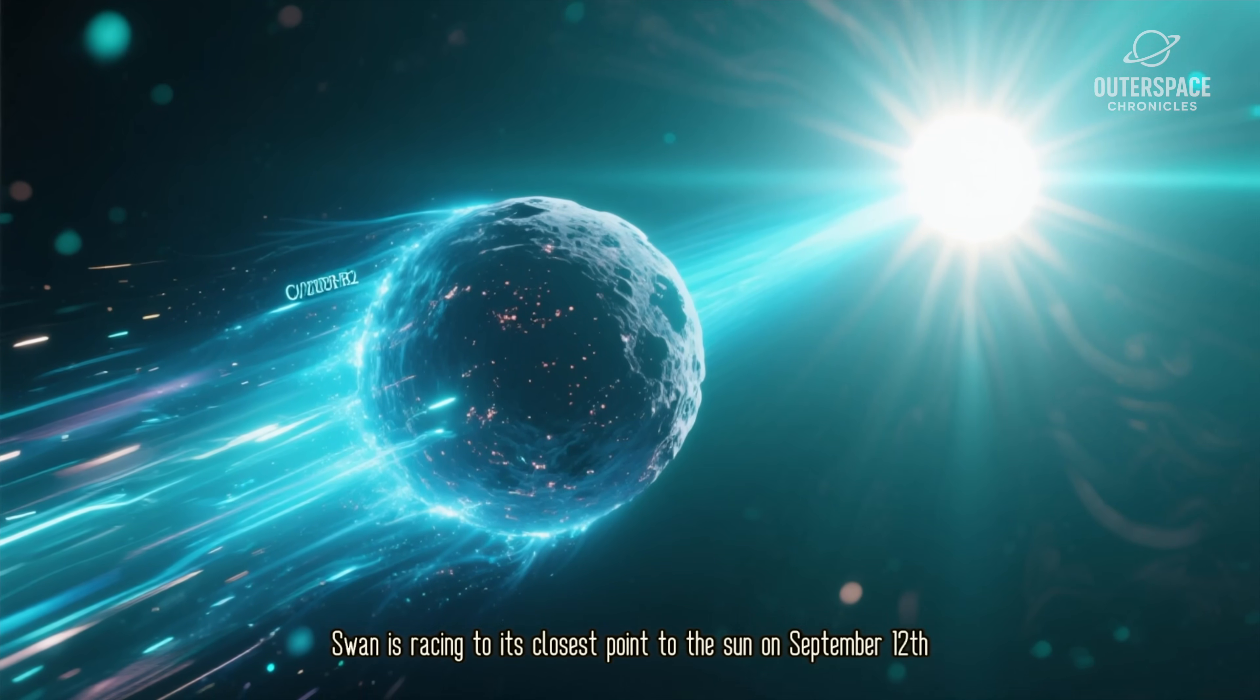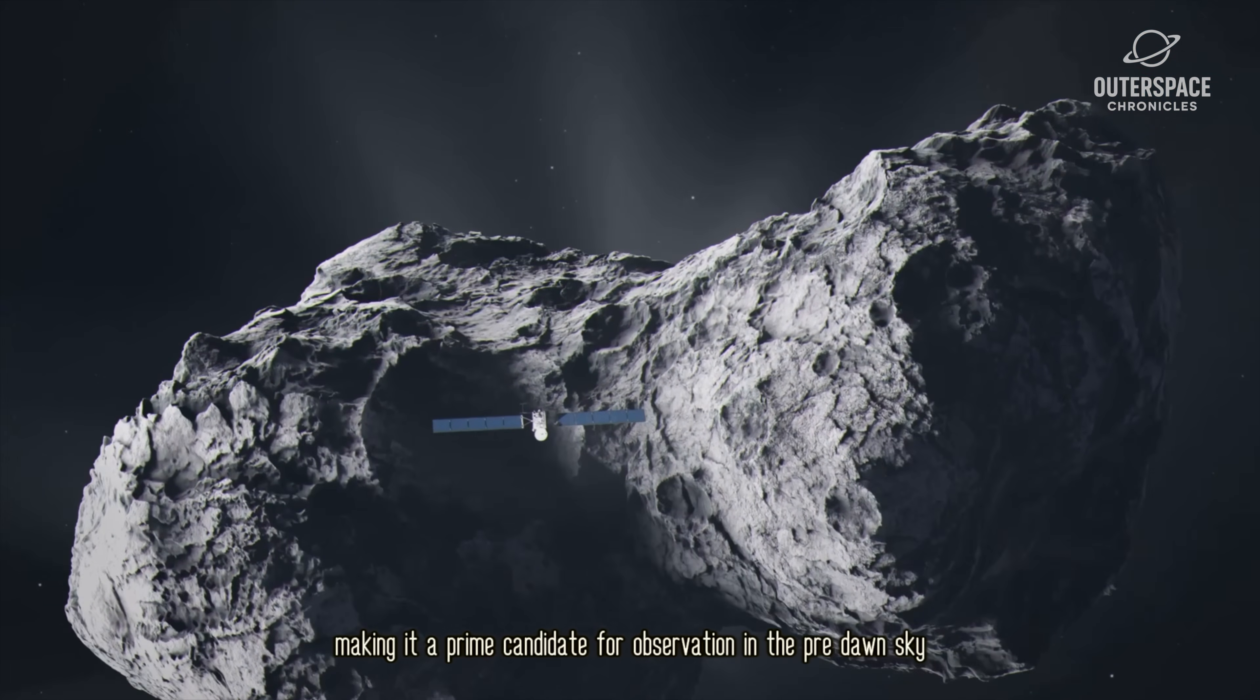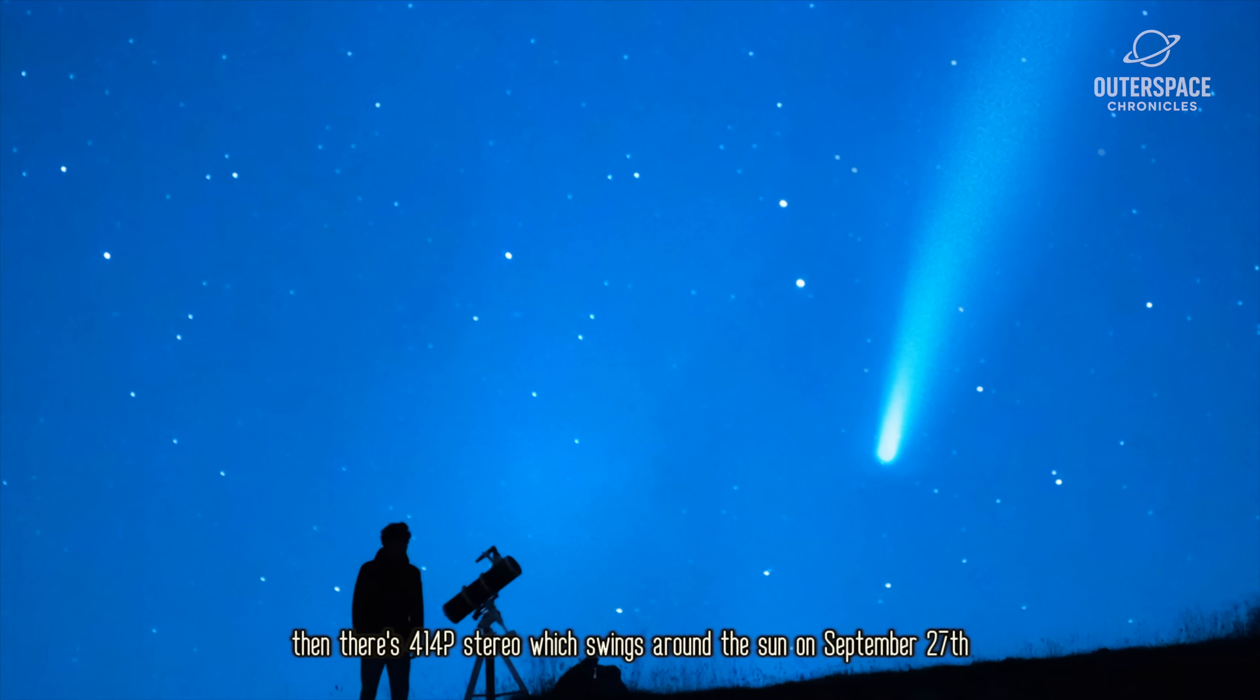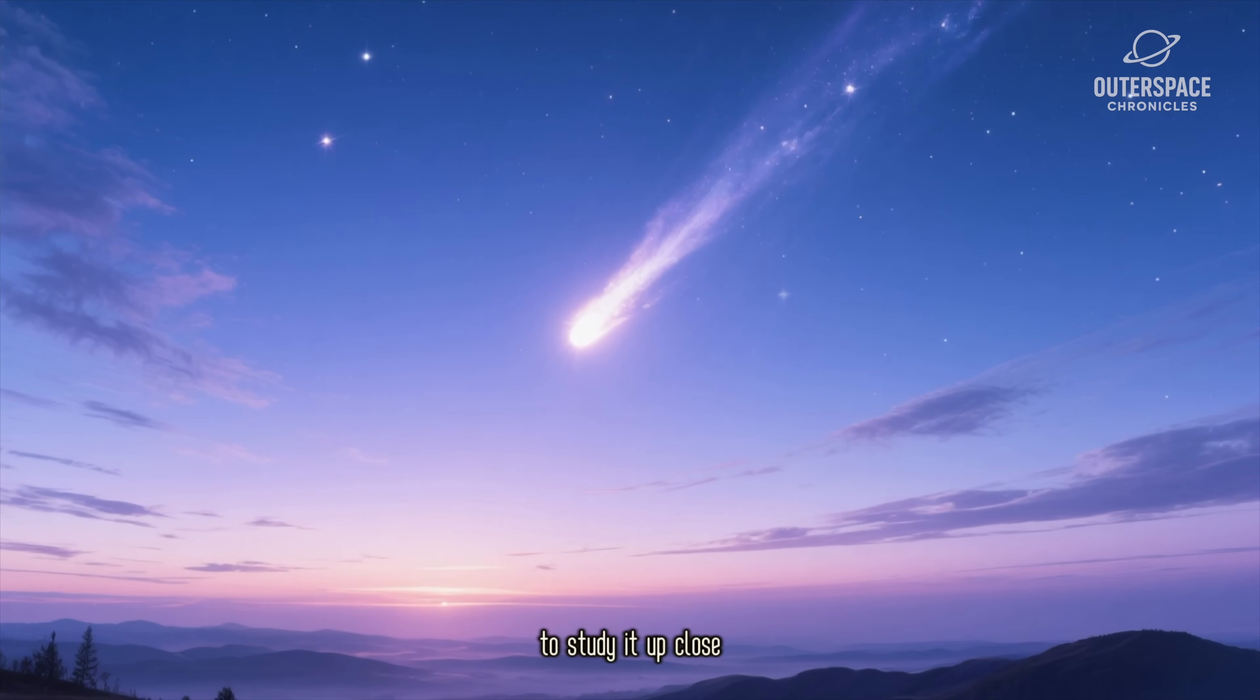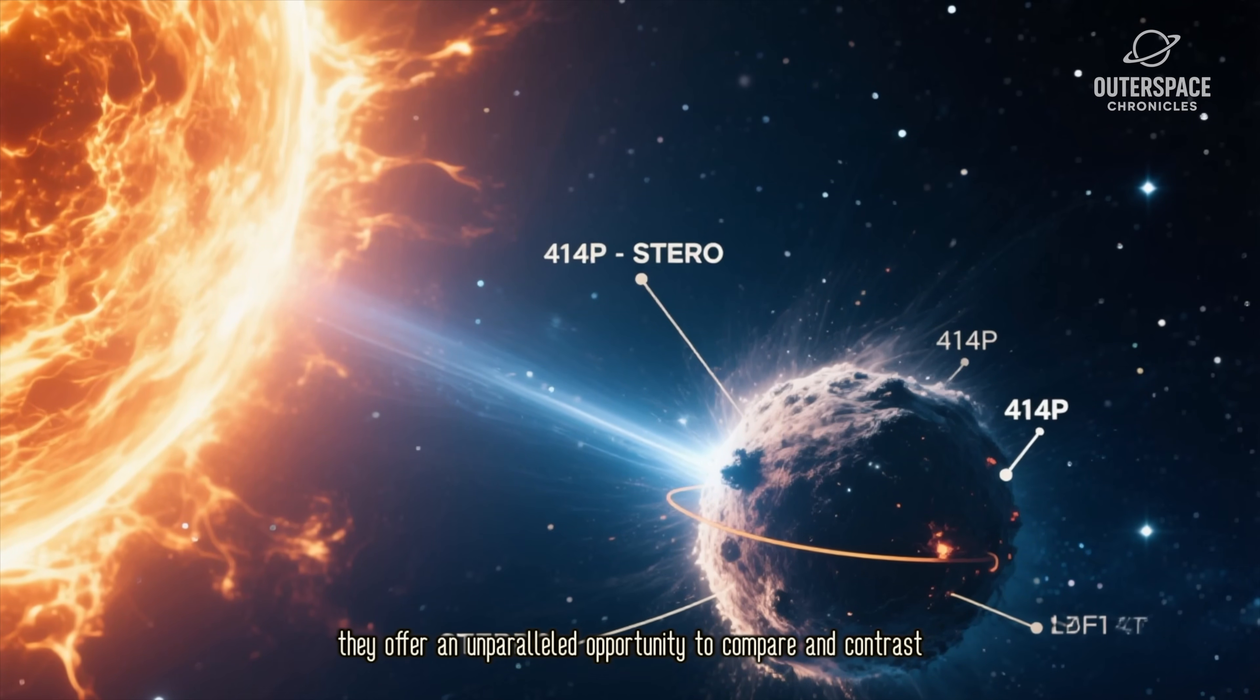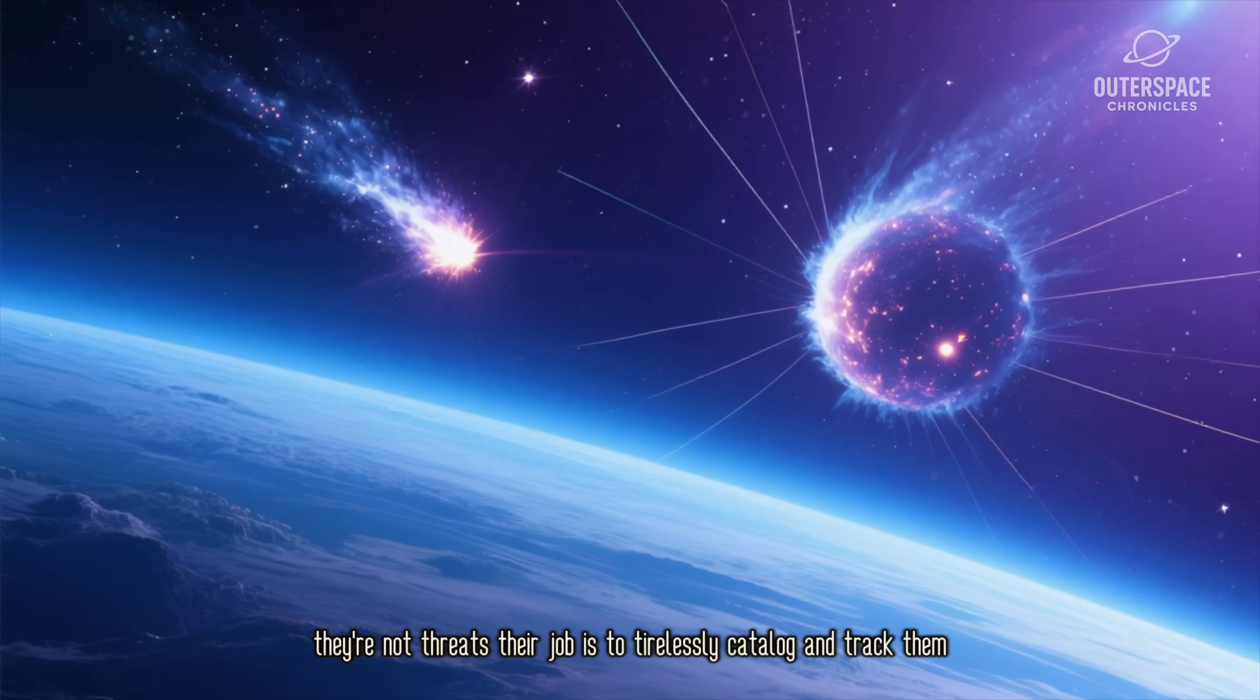You have one oven, our Sun, and you're putting in seven different cakes at the same time to see how their unique recipes react to the same heat. For instance, comet C2025 R2 Swan is racing to its closest point to the Sun on September 12th and will sweep past Earth at a relatively close 0.25 AU on October 21st. Then there's 414P Stereo, which swings around the Sun on September 27th, offering a unique chance for our solar watching spacecraft to study it up close.